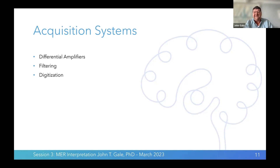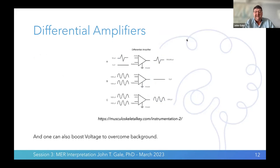The burden of acquisition systems for doing single unit recording is greater than for more purely analog signals. Different types of components in these digital acquisition systems include amplifiers, filtering, and digitization.